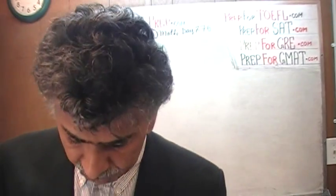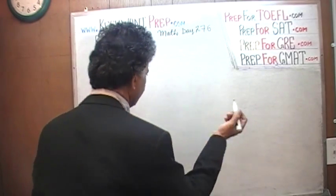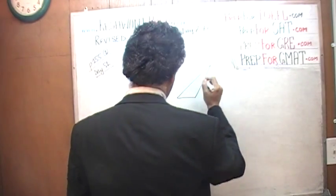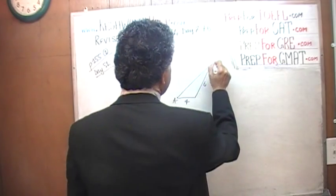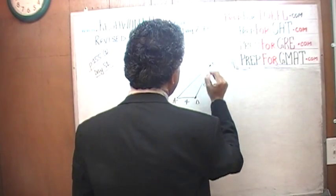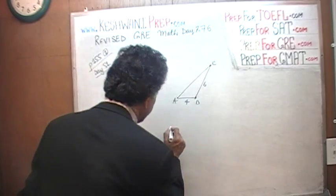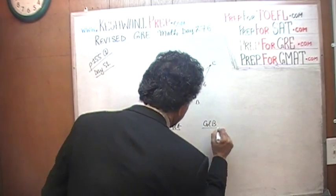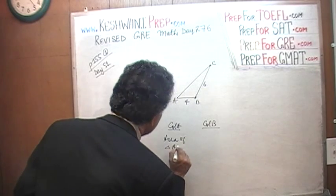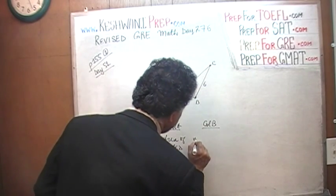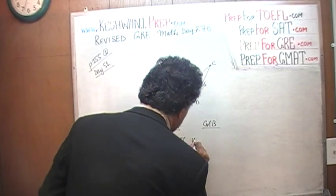Before we actually solve problem number 1, let me ask you a simple question. I am giving you a triangle. We are told that the base is 4 and this side is 6. Let us call it triangle ACD. What is the area of this triangle? We are asked to compare: Column A is the area of triangle ACD versus 12 in Column B.